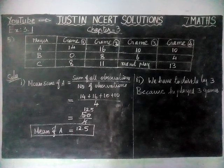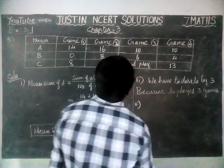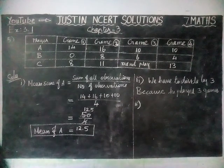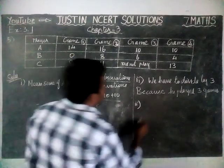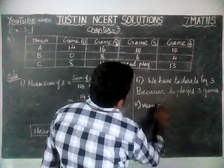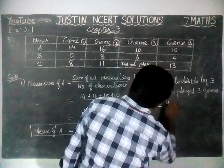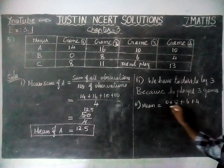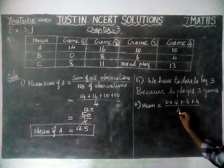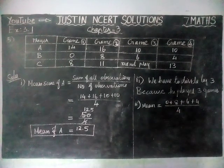Next, 3rd question: B played in all 4 games — how would you find the mean? B played in all 4 games, but listen carefully: in 1 game he got 0, but this is also considered as a played game. So the mean is equal to sum of all observations divided by number of observations: 0 plus 8 plus 6 plus 4, divided by 4, because in 1 match he got 0 but he played that game, so we consider 4 games.